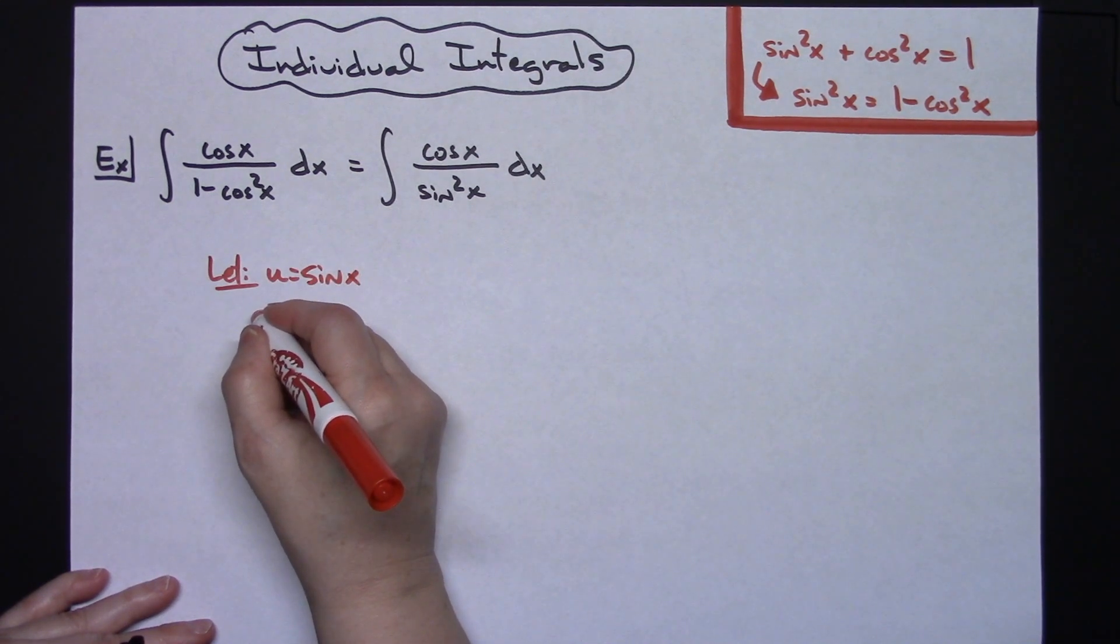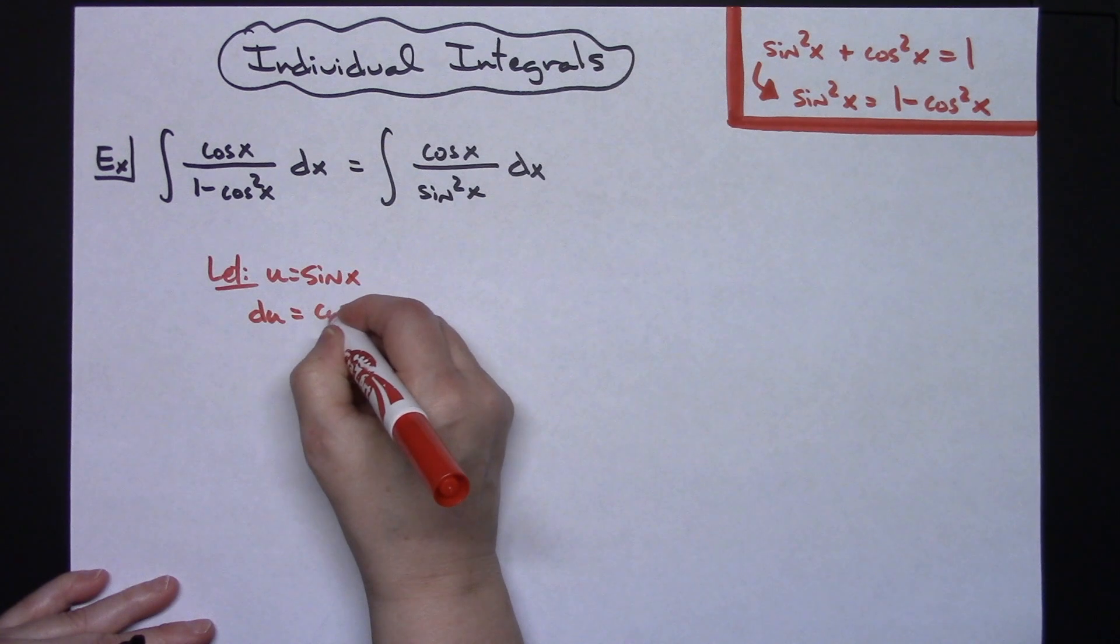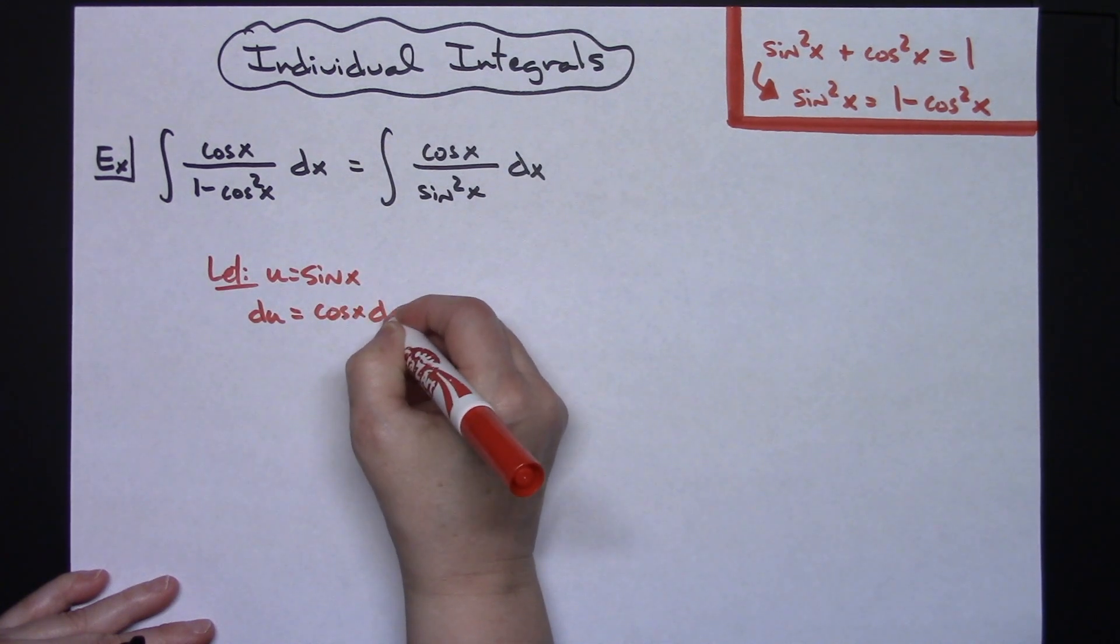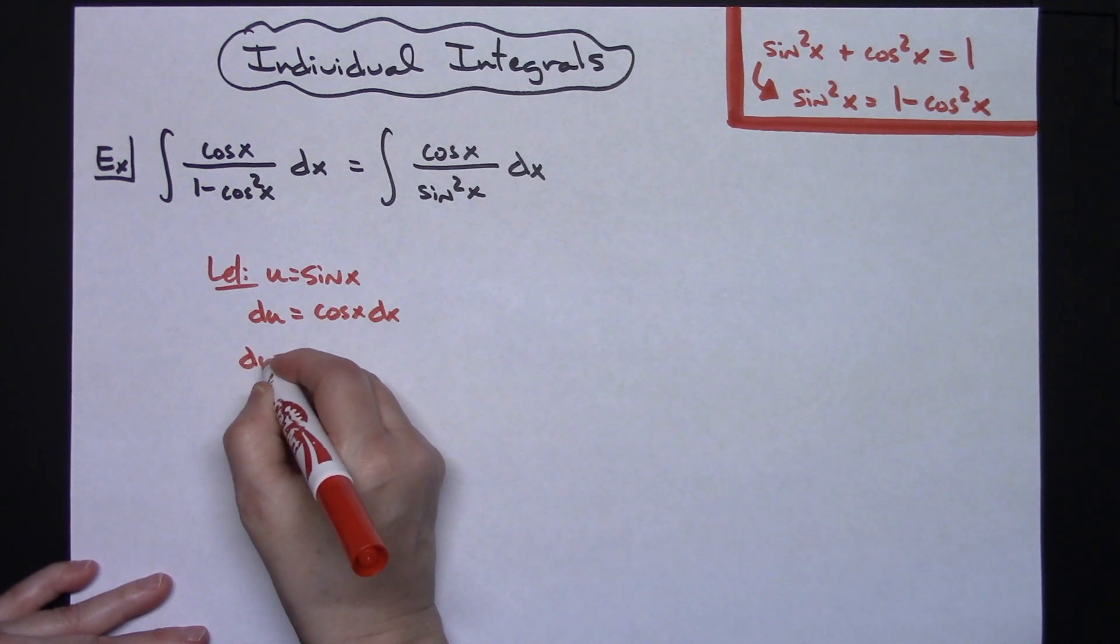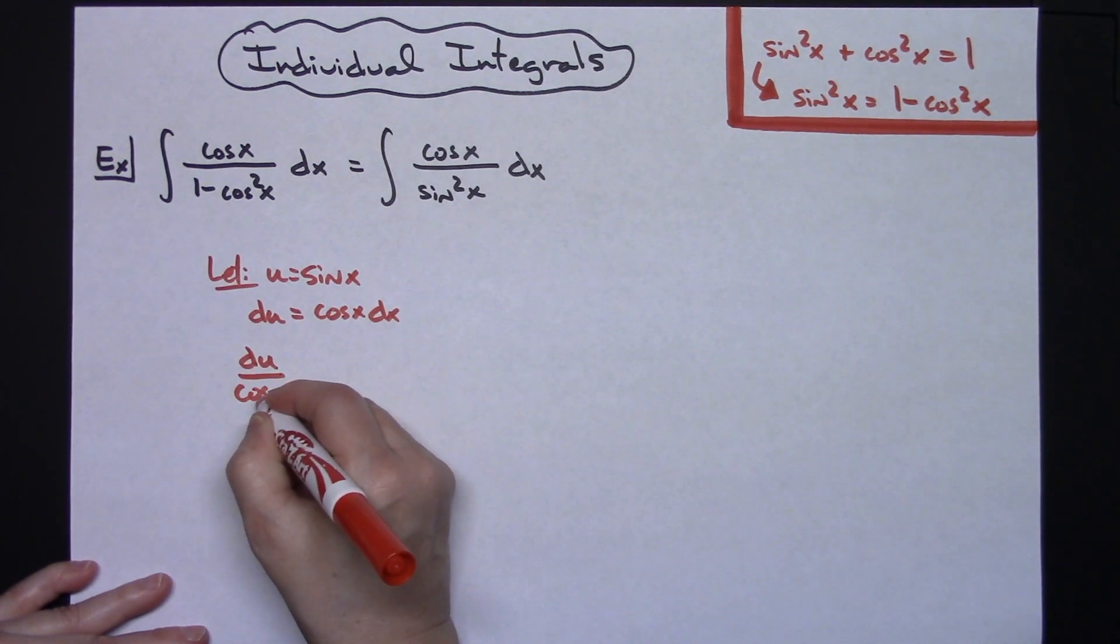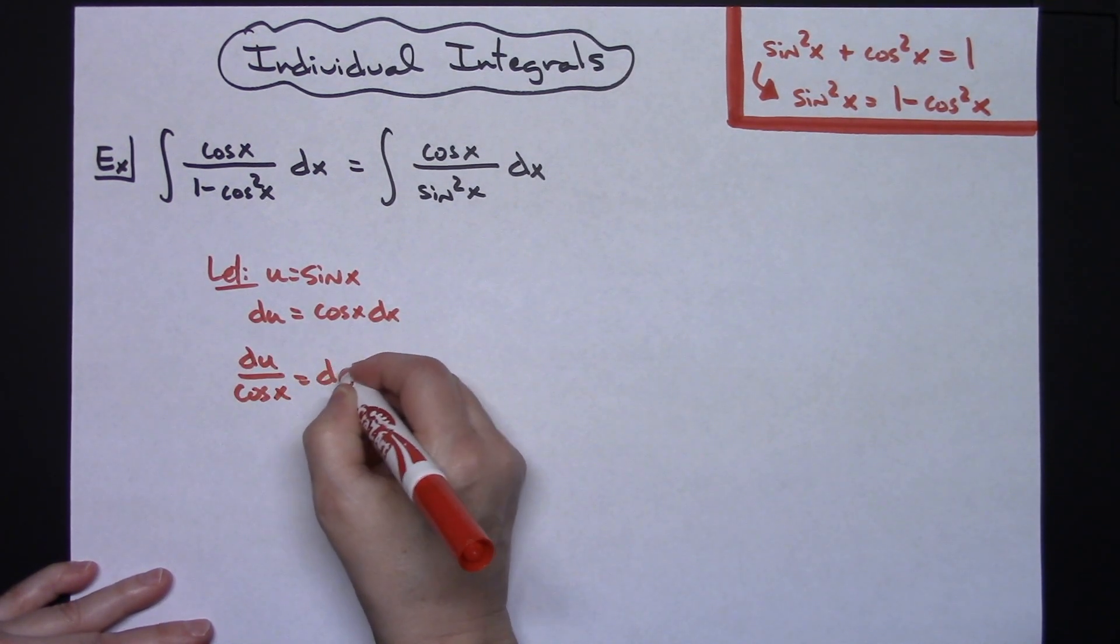Then going to take the derivative of both sides. I'll have du is equal to cosine x dx. I'm going to go ahead and solve all the way down for dx. So I'll have du over cosine x is equal to my dx.